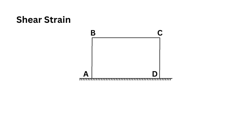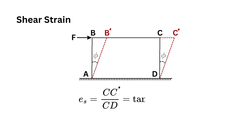When a shear load is applied on a body, a shear strain will be produced, which is measured by the angle through which the body distorts. A rectangular block, fixed at one face and subjected to force F, after application of force distorts through an angle phi and occupies a new position. The shear strain is given by CC' divided by CD, which equals tan phi. Since phi is very small, shear strain equals phi.